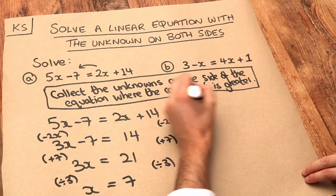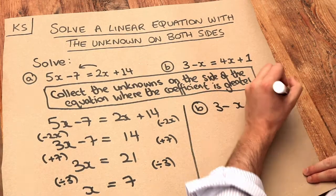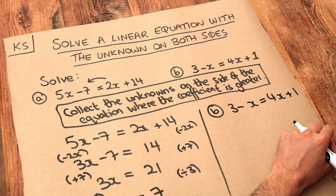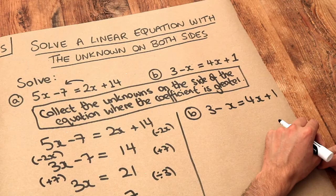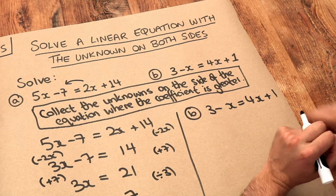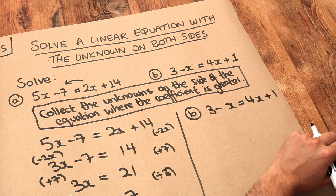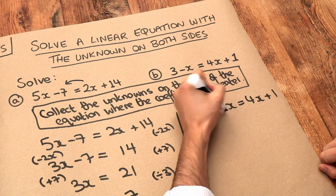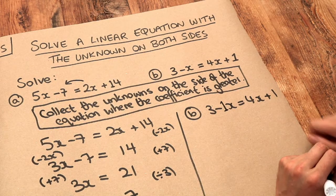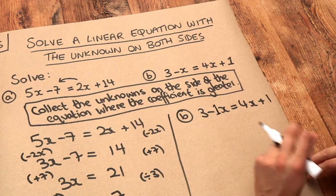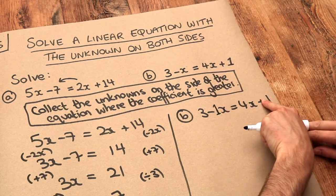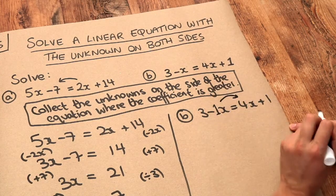What about B? Well, let's read this tip again. Collect the unknowns on the side of the equation where the coefficient is greater. So in layman's terms, that's just saying, do we have more X's on the right-hand side of the equation or the left? Well, if I put a little cheeky one there, can you see that 4 is greater than minus 1? And therefore, we want to collect all the X terms on the right-hand side of the equation, so on this side.